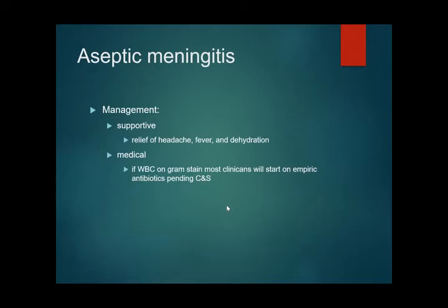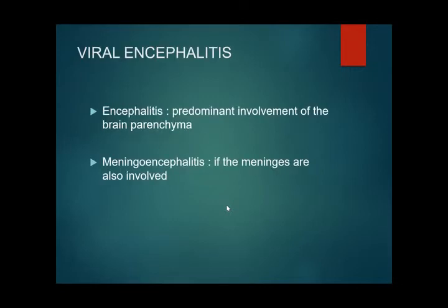Viral encephalitis: encephalitis is involvement of brain parenchyma. Meningoencephalitis occurs when the meninges are also involved along with brain parenchyma. So encephalitis has two clinical presentations — simple encephalitis or meningoencephalitis (meningitis plus encephalitis). The difference is that in meningoencephalitis the patient will also have signs of meningeal irritation, which are not found in isolated encephalitis.